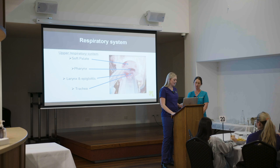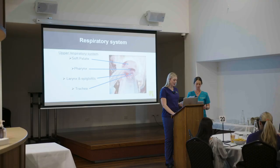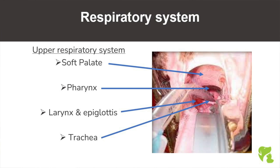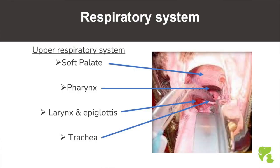The pharynx is divided by the soft palate into the nasopharynx, which connects to the caudal nasal cavities, and the oropharynx, which connects to the caudal oral cavity. Next is the larynx, a collection of cartilage including the epiglottis, thyroid, arytenoid, and cricoid. The purpose of the larynx is to prevent foreign body materials from entering the respiratory tract during swallowing, to regulate the flow of gases into the respiratory tract, and to contribute to vocalisation.